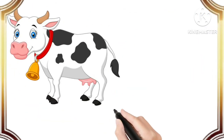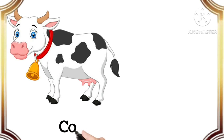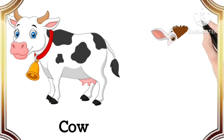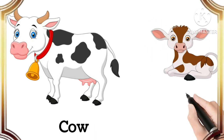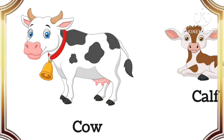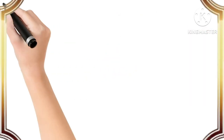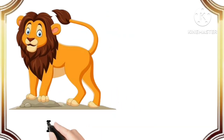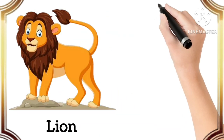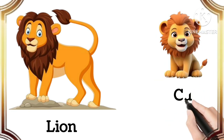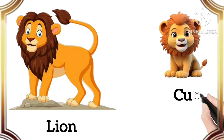Cow. The baby of cow is calf. Calf. Lion. The baby of lion is cub. Cub.